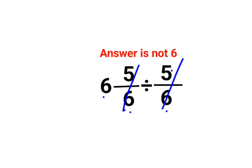A lot of people think that this can cancel instantly, so we are just left with 6 divided by 1. The answer is just 6. That, my dear friends, is incorrect.